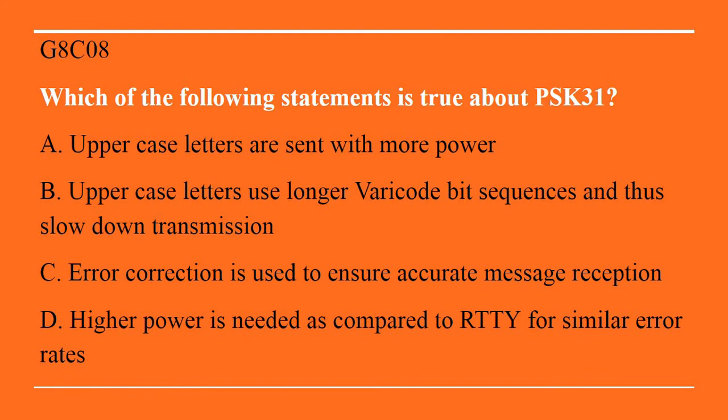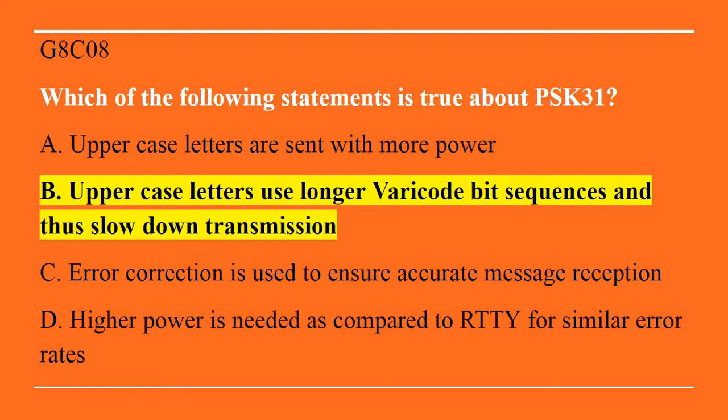G8C08: Which of the following statements is true about PSK31? A. Uppercase letters are sent with more power. B. Uppercase letters use longer varicode bit sequences and thus slow down transmission. C. Error correction is used to ensure accurate message reception. Or D. Higher power is needed as compared to RTTY for similar error rates. The correct answer is B: uppercase letters use longer varicode bit sequences and thus slow down transmission.